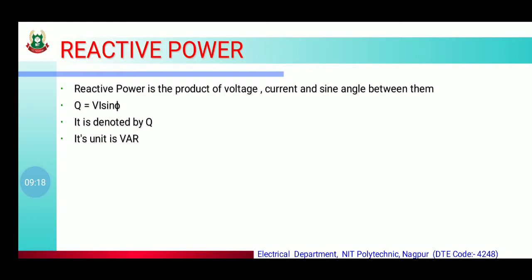Next is reactive power. Reactive power is the product of voltage, current, and sine of the angle between them. हम reactive power को Q से note down करते हैं। Formula: Q = VI sinφ — that is the multiplication of voltage and current and sine angle between voltage and current. इसका unit VAR (Voltage Ampere Reactive) होता है।